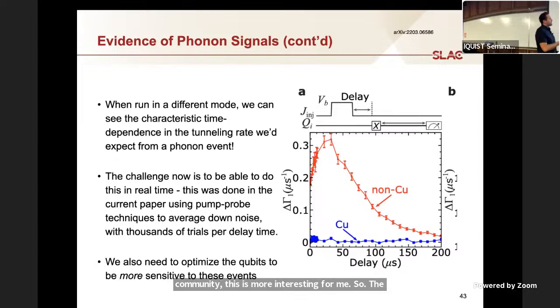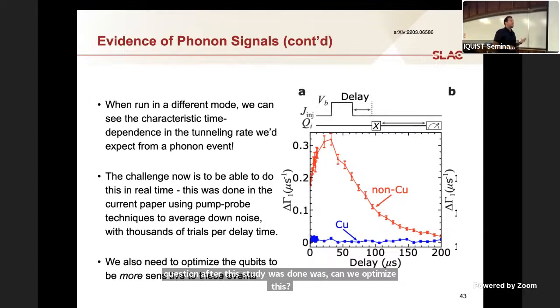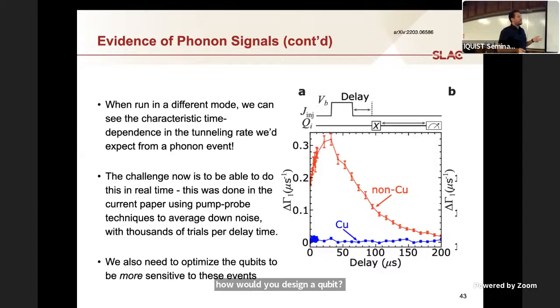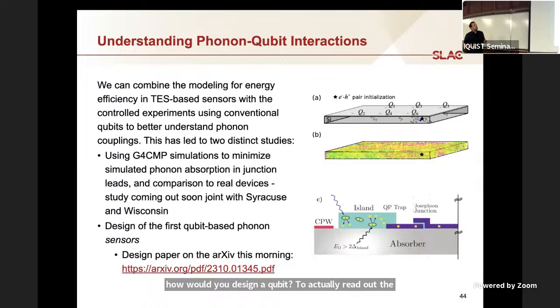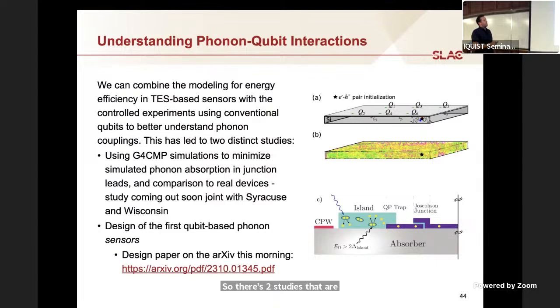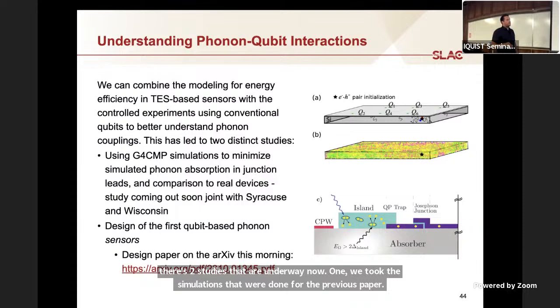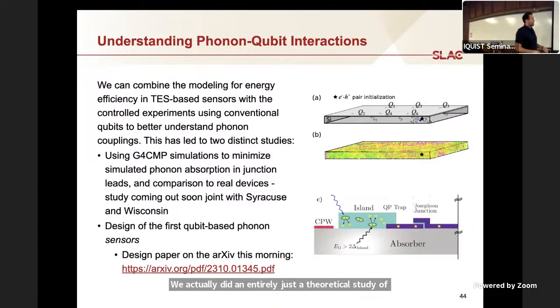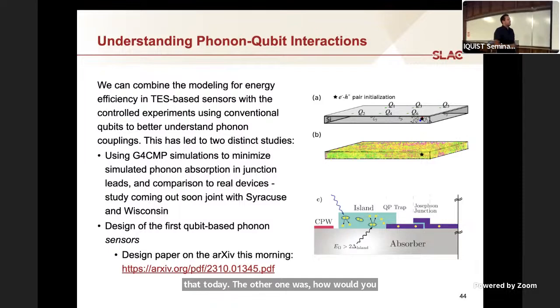The rise time is basically dictated by the distance from the radiator and the fall time is dictated by the thermalization rate of the phonons in the substrate. Something that's interesting for the quantum community, this is more interesting for me. The question after this study was done was, can we optimize this? How efficiently can you capture phonon energy? How would you design a qubit to actually read out the energy instead of doing this parasitically on top of something that's really designed for a different application? There's two studies that are underway now. One, we took the simulations that were done for the previous paper. We actually did an entirely theoretical study of for different mitigation techniques, what gets you better phonon absorption.